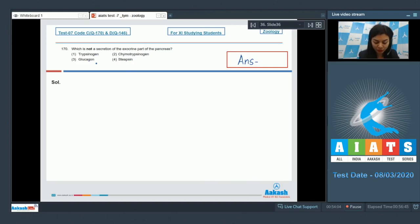Among the given options, option number 3, glucagon is a hormone. And hormones are secreted by endocrine glands. It cannot be secreted by exocrine part of a gland.